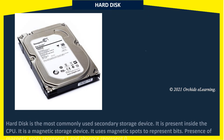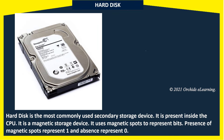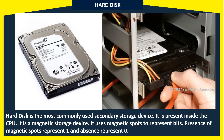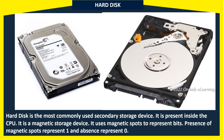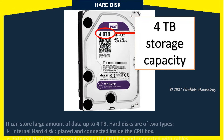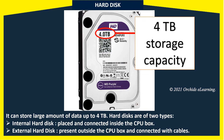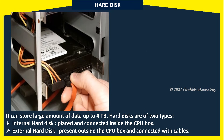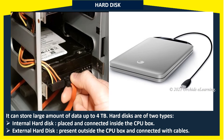Hard disk is the most commonly used secondary storage device. It is present inside the CPU and is a magnetic storage device — it uses magnetic spots to represent bits. The presence of magnetic spots represents 1 and absence represents 0. It can store large amounts of data up to 4 terabytes. Hard disks are of two types: internal hard disk, placed and connected inside the CPU box, and external hard disk, present outside the CPU box and connected with cables.